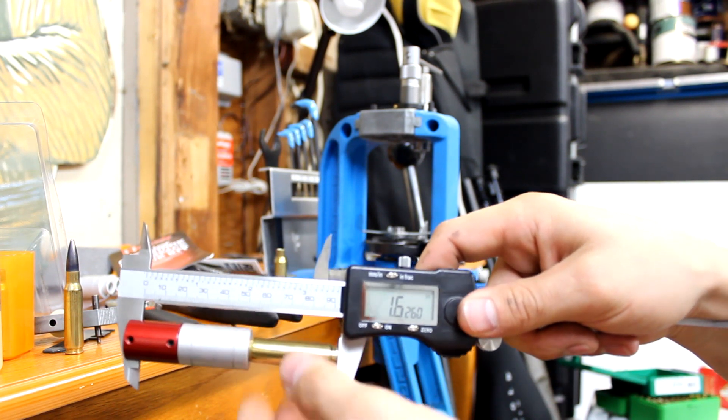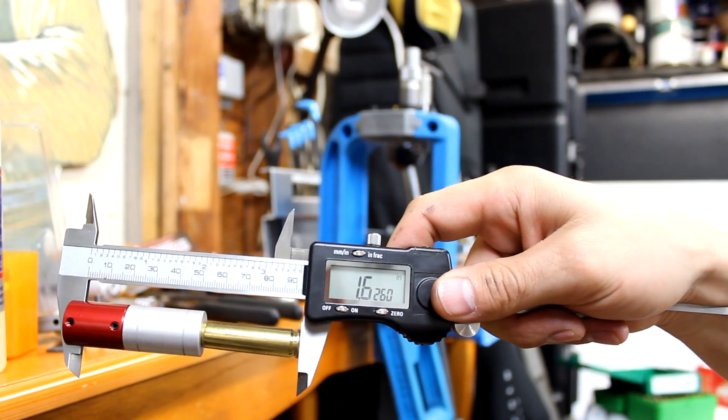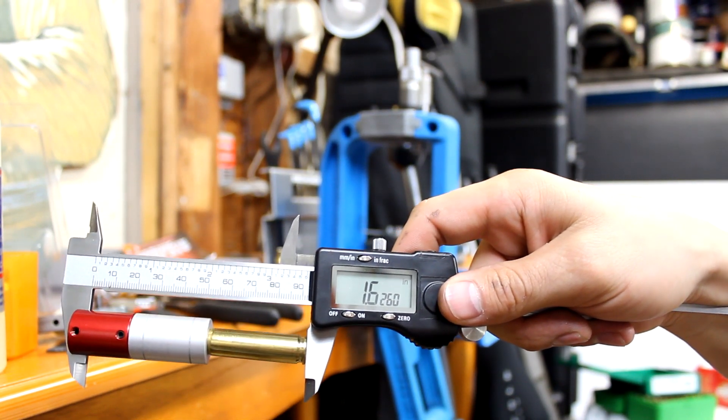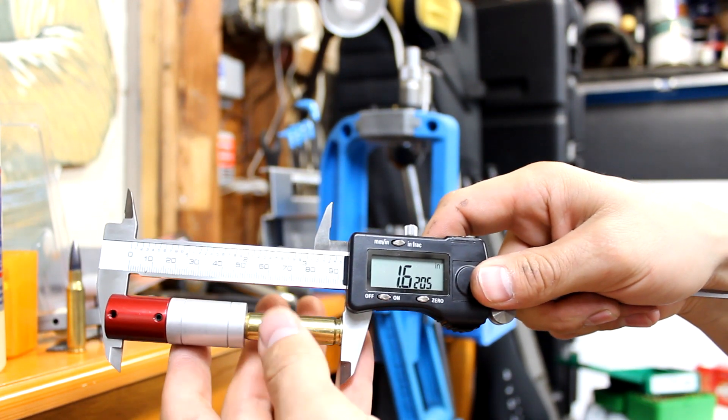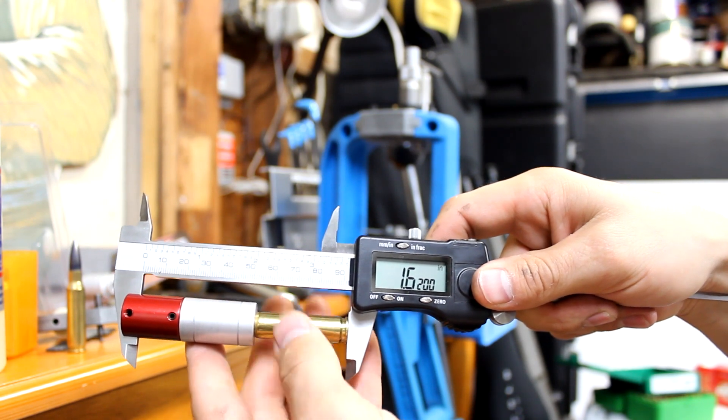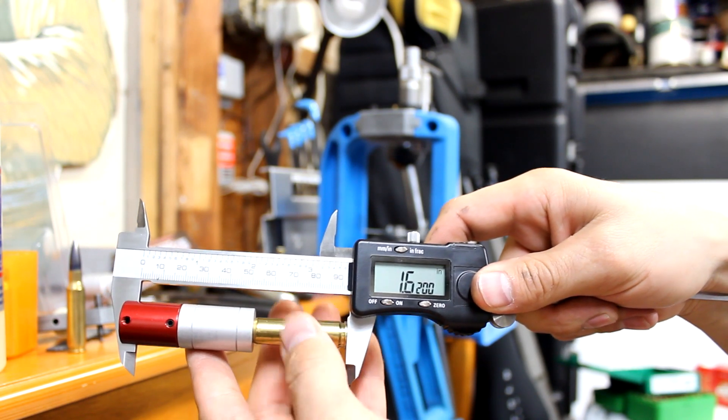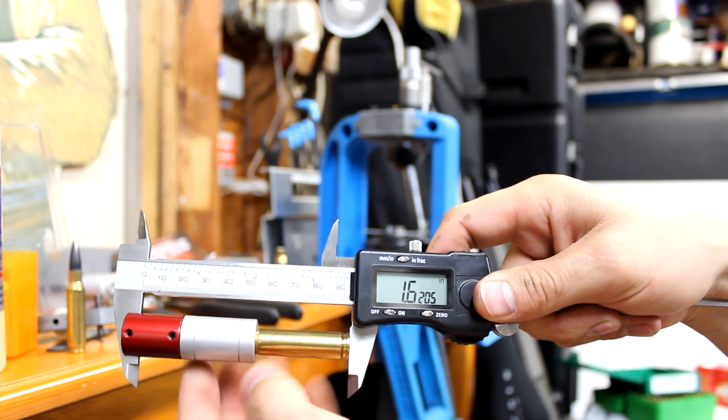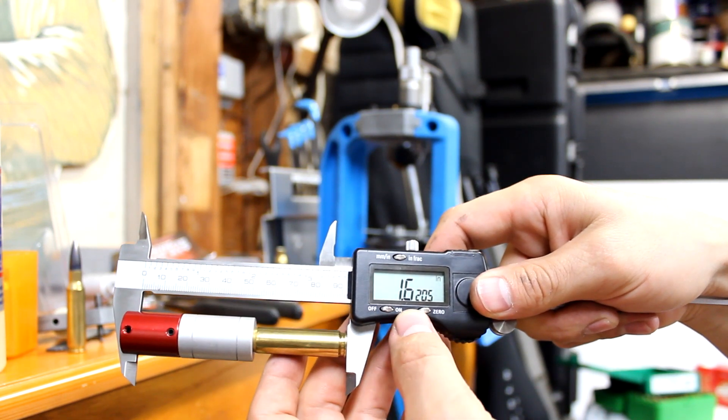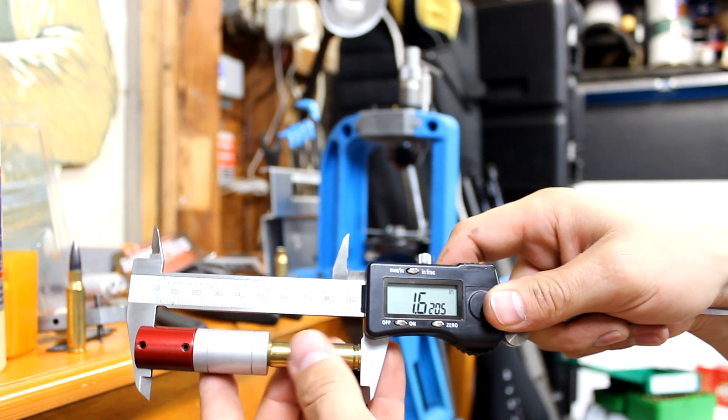So we're getting 1.6260. Well, sorry. You've got to spin it a few times and make sure it's all the way pressed into here. 1.6205. That's a little more like it.